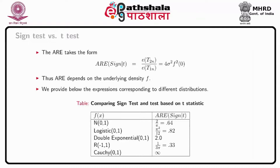For example, when f(x) is normal(0,1), ARE gives 2/pi which equals 0.64. For logistic(0,1) distribution, ARE equals 0.82. For double exponential distribution, it is 2.0. For rectangular(minus 1 to plus 1) distribution, it is 0.33. For Cauchy(0,1) distribution, it is infinity.